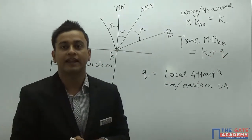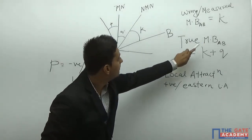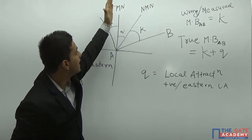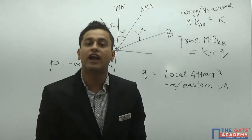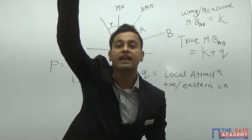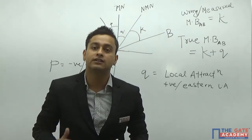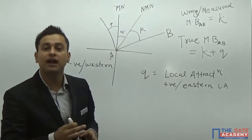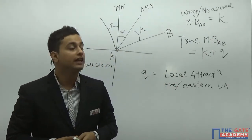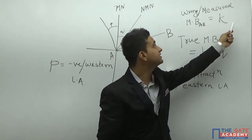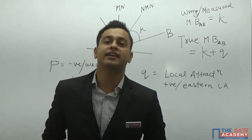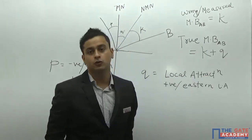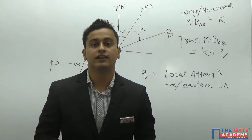Due to local attraction, we get a deviation in our magnetic north which gives wrong results, yielding angle K as the measured magnetic bearing of line AB. The true magnetic bearing of line AB is K plus Q, because we must account for the local attraction angle to reach the true magnetic north. That covers all the main aspects of this topic.